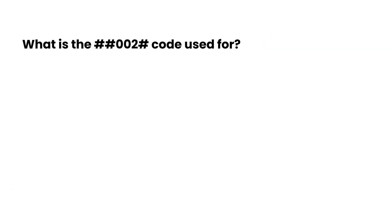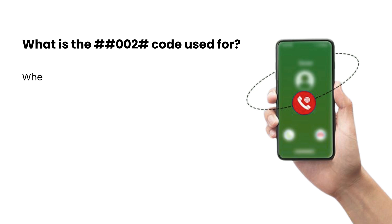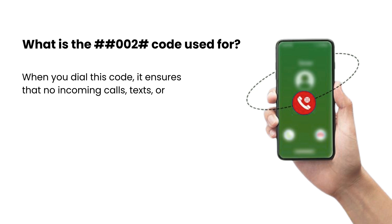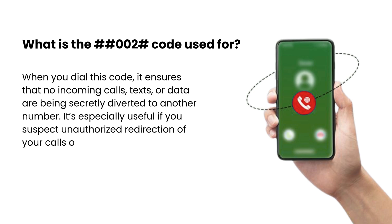What is the ##002# code used for? When you dial this code, it ensures that no incoming calls, texts, or data are being secretly diverted to another number. It's especially useful if you suspect unauthorized redirection of your calls or messages.